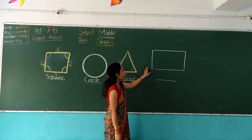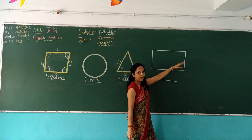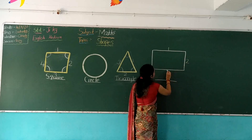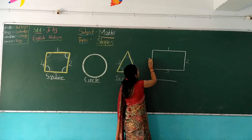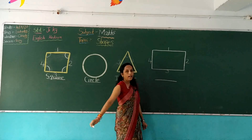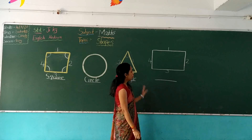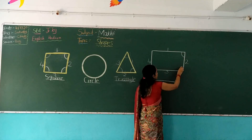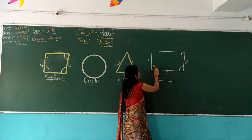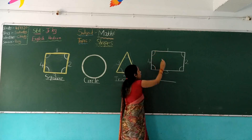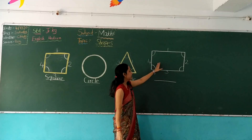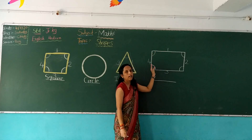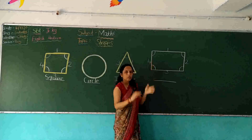And our last shape is rectangle. It has 4 sides: 1, 2, 3, 4. And it has 4 corners: 1, 2, 3, 4. This is a rectangle. 2 sides long and 2 sides short.